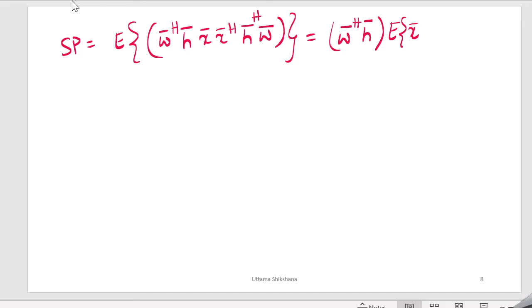We need to calculate SNR. SNR will be the expectation of the signal power - expectation of w bar Hermitian h bar x times x Hermitian h bar Hermitian w bar. This is the power p, the power of the transmitted signal from the transmitter. This we can write it as modulus of w bar Hermitian h bar whole square into p.